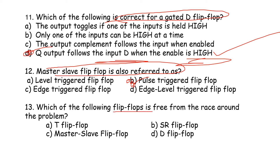Which of the following flip-flops is free from the race-around problem? The T flip-flop is free from the race-around condition because the output depends only on the input.